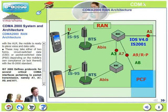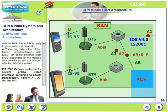What is IS2000? IS2000 defines protocols for several critical CDMA interfaces pertaining to packet transmission, namely the A1, A7, A9 and A11 interfaces.